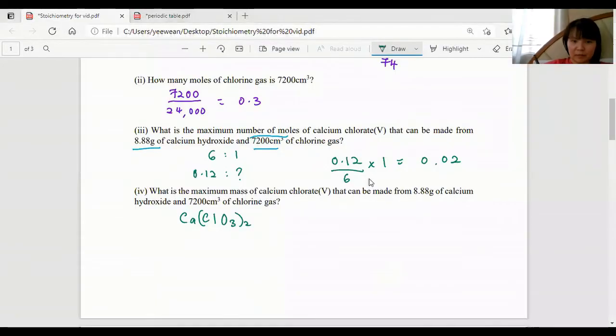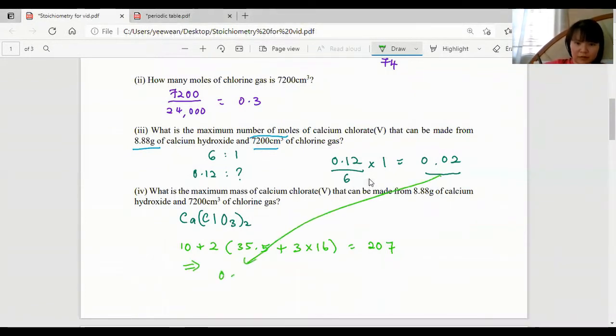Next, what is the maximum mass? From this mole, let's convert it back to mass. I need to calculate the MR for this. This is calcium, 2 of chlorine and 3 oxygens here. I got 207. So I'm going to write 0.02 times 207, and I'm going to get 4.14 grams.